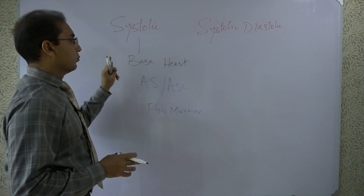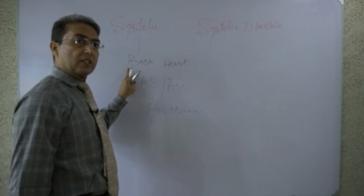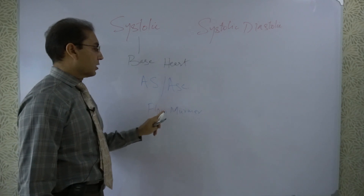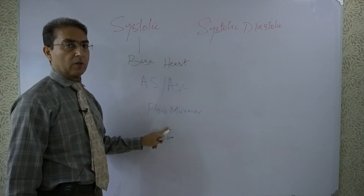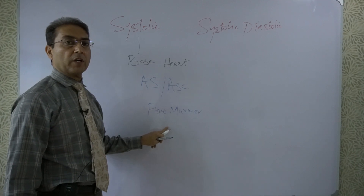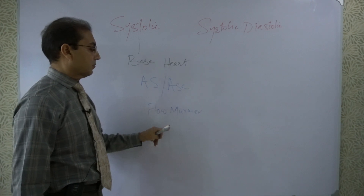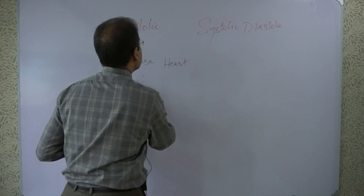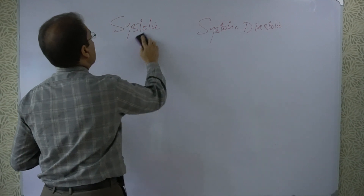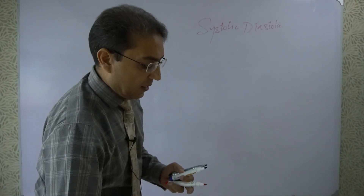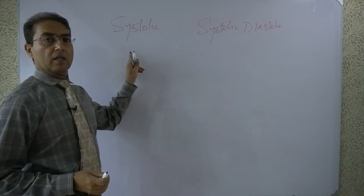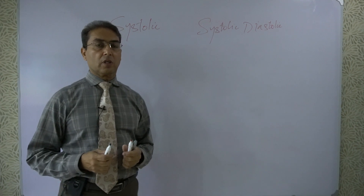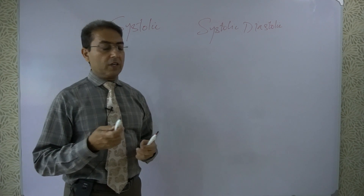If the bruit is systolic and we proceed to the base of the heart and a murmur is present, it is either from aortic stenosis, aortic sclerosis, or a flow murmur due to anemia or aortic regurgitation. If there is no murmur at the base of the heart, we come back to the neck — this may be a local phenomenon. There are different vascular structures in the neck that can produce a bruit, such as the carotid system.